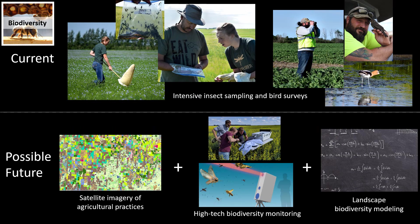Similarly, for biodiversity, we're working with partners to manually assess all of the birds and insects living on these farms, and tracking changes over time. Insects perform critical services like pollination and predation of pests, so we're working to measure not only how many and what types of insects are in these fields, but what ecosystem services they're providing.